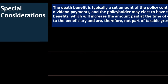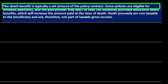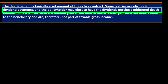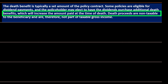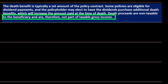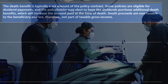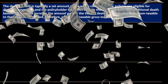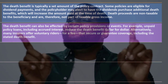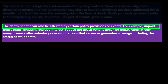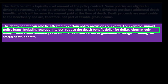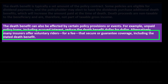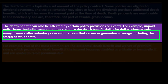Special considerations: the death benefit is typically a set amount of the policy contract. Some policies are eligible for dividend payments, and the policyholder may elect to have dividends purchase additional death benefits, increasing the amount paid at death. Death proceeds are non-taxable to the beneficiary and are not part of taxable gross income — the recipient generally does not have to report it as income. The death benefit can also be affected by certain policy provisions. Many insurers offer voluntary riders — for a fee — that secure or guarantee coverage, including the stated death benefit.